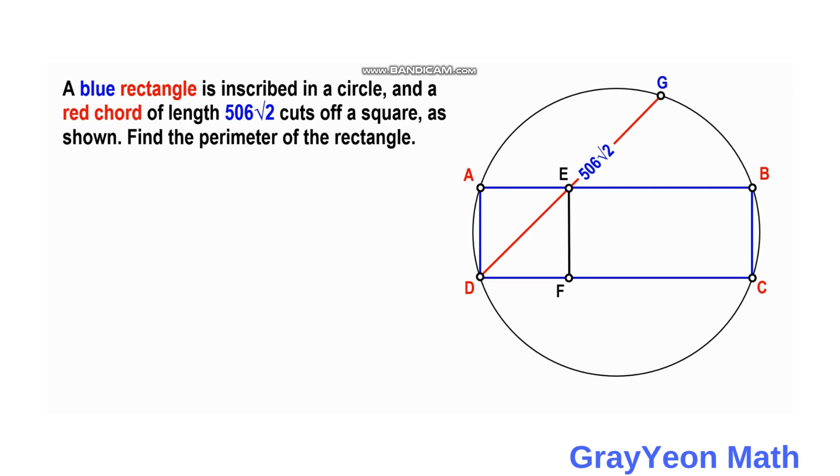First thing we may do is let the sides of this rectangle be: the width we can make this as a and the length we can make this as b. It is given that this diagonal 506√2, or the diagonal DG, cuts this rectangle with a square. So this segment DE will be the diagonal of this square.